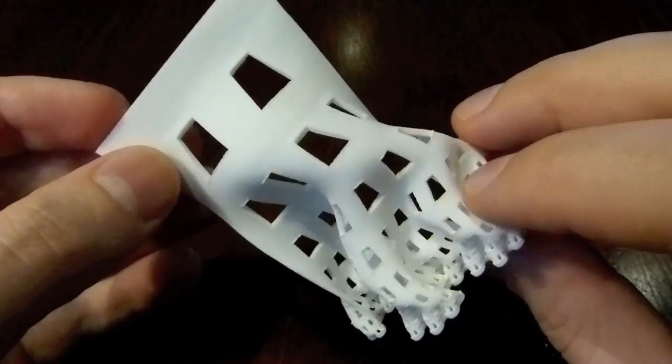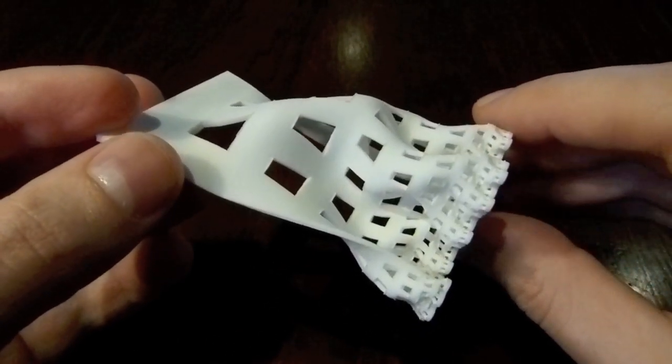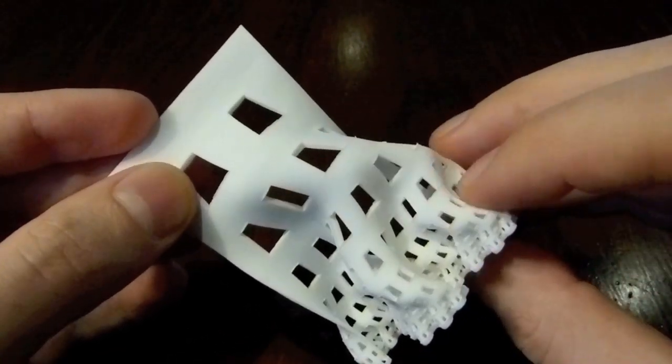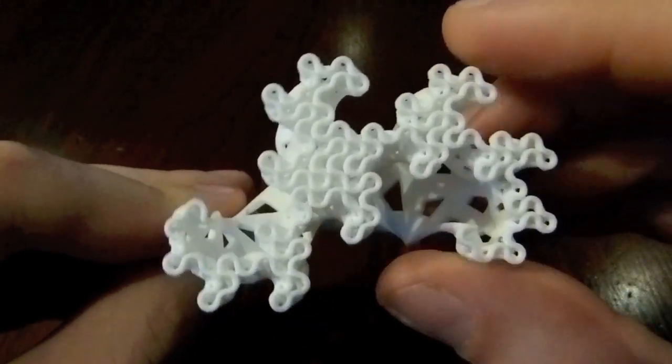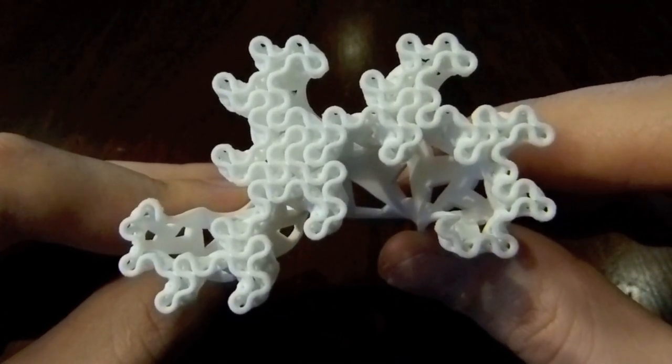You can describe the iterative process using L-systems, for example. And so there are nine steps here, so if you look at the bottom, what you see is the ninth iteration of the Dragon Curve.